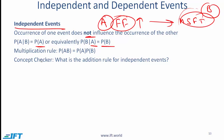What happens to the multiplication rule when we have independent events? The probability of AB, the joint probability, is simply equal to the probability of A times the probability of B. You may recall from the earlier formula we were using probability of A given B; since probability of A given B is simply probability of A when the events are independent, that is what we plug in here.